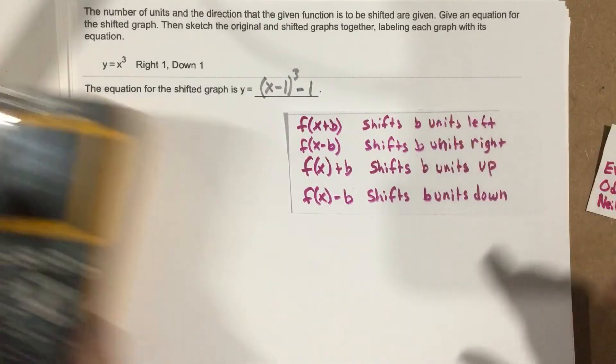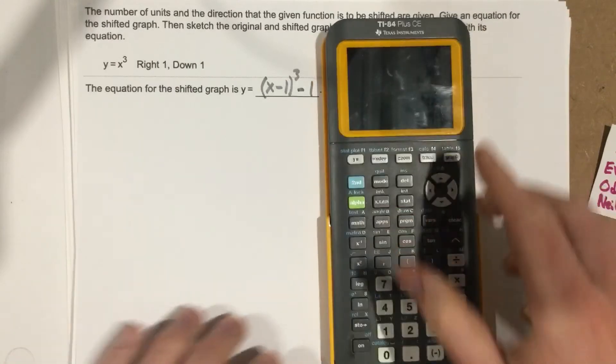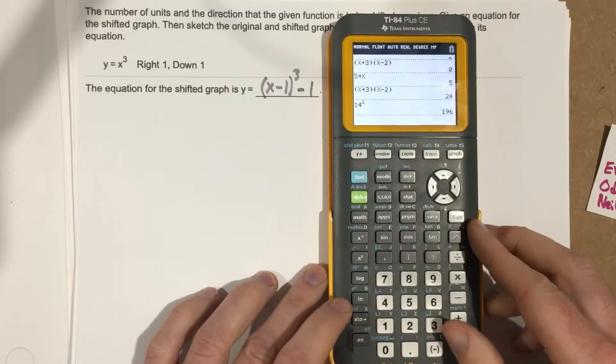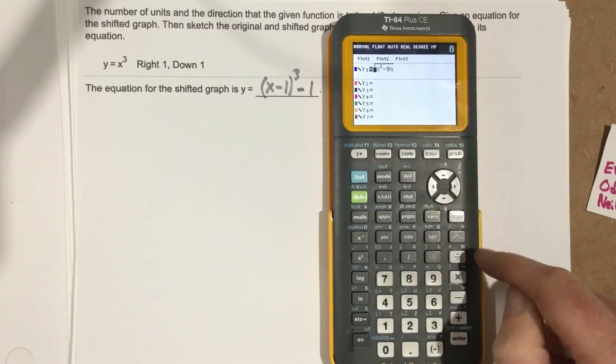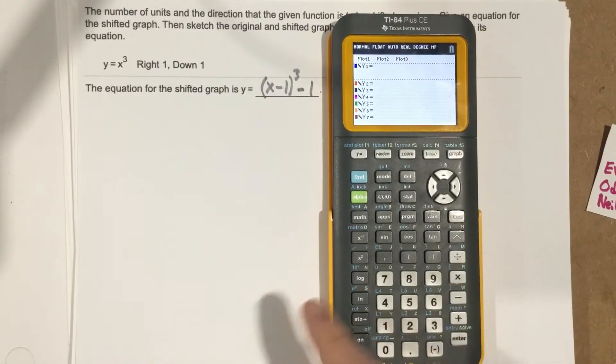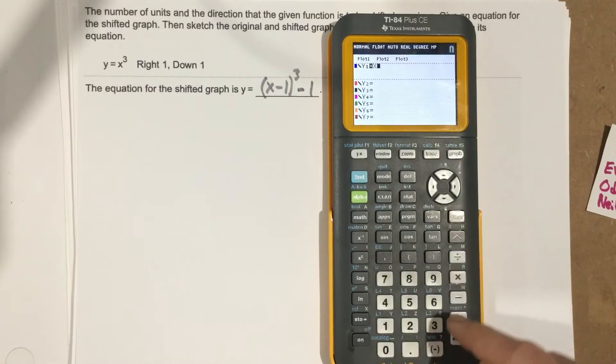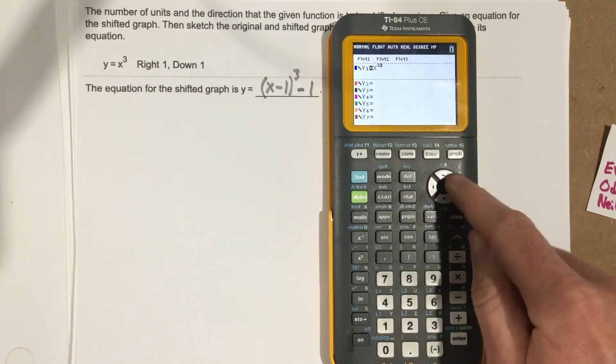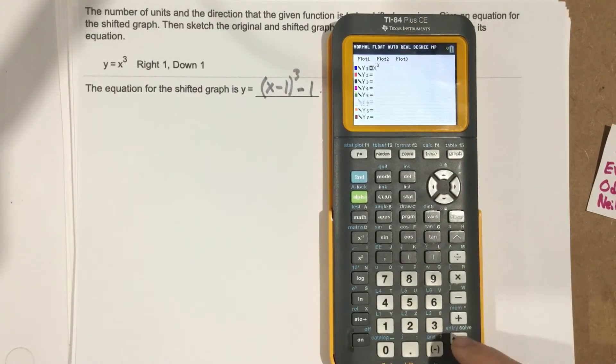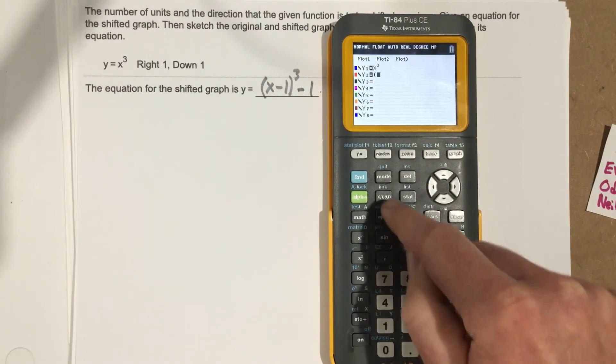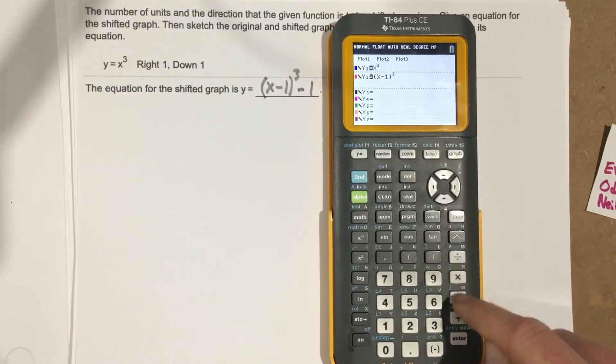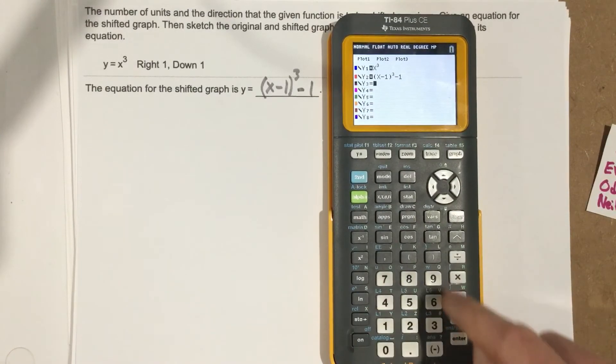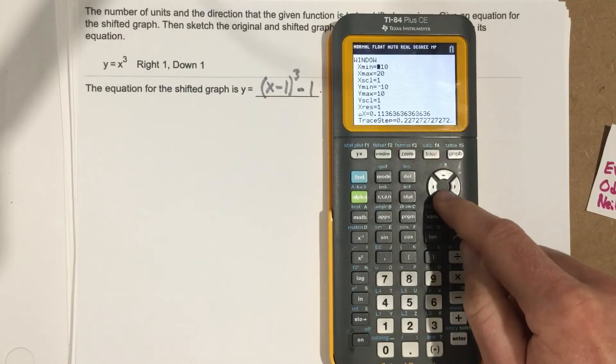Let's use the TI-84 to graph these. I'll go to y= and type in x³ first. Then for the second equation, I'll type in (x - 1)³ - 1.